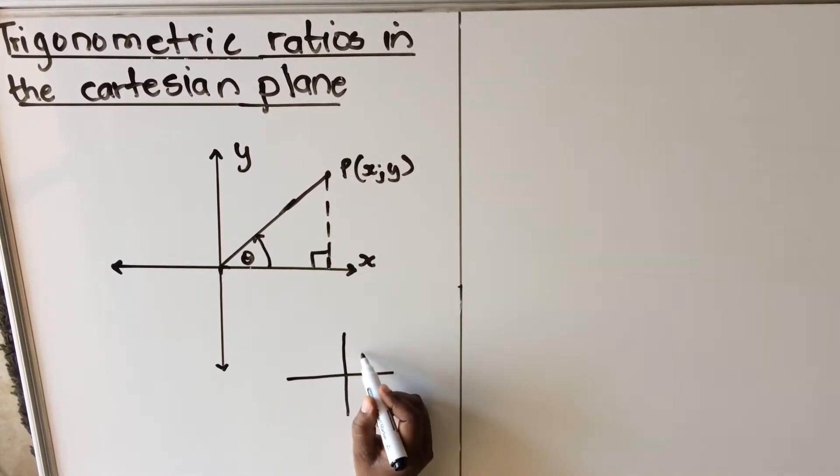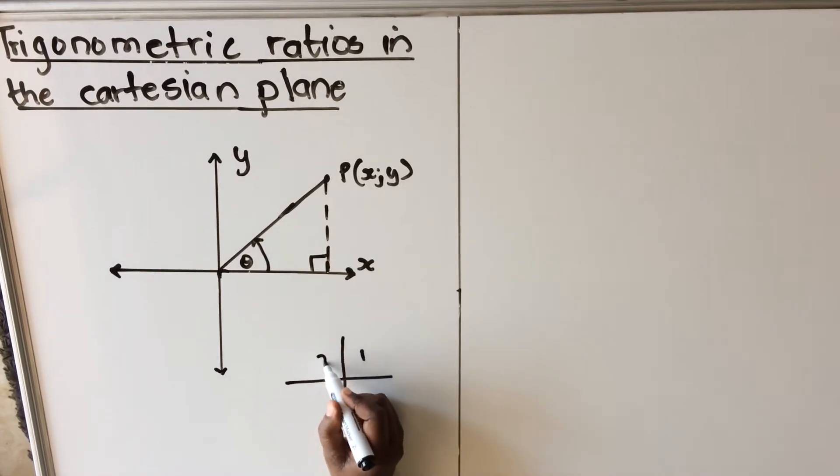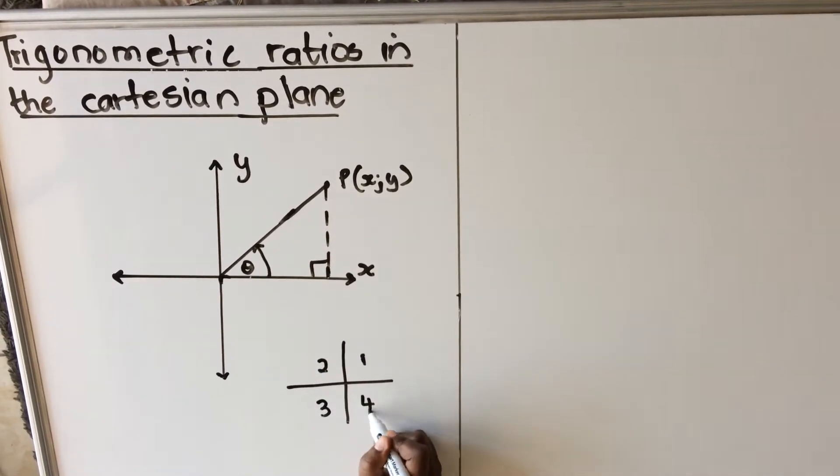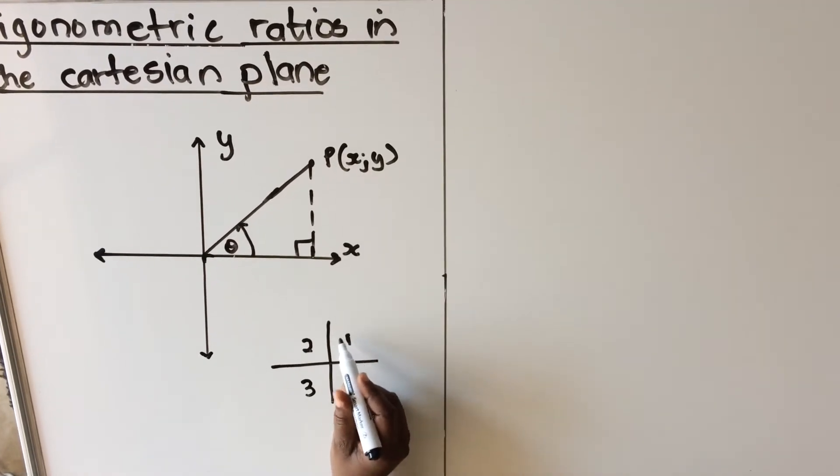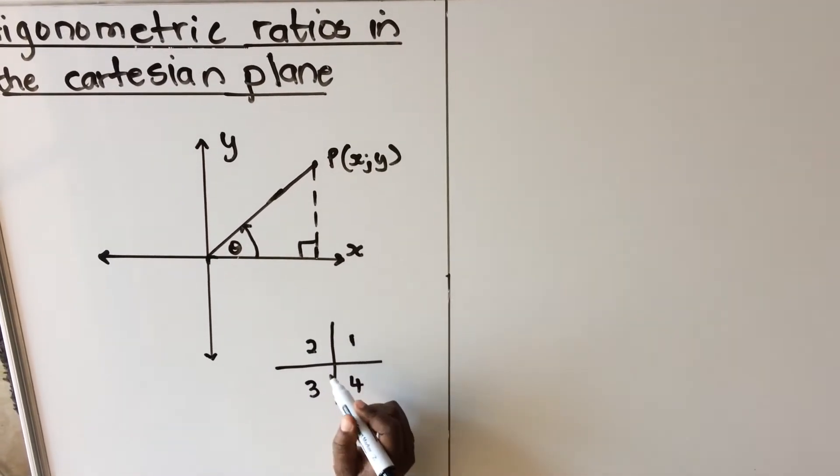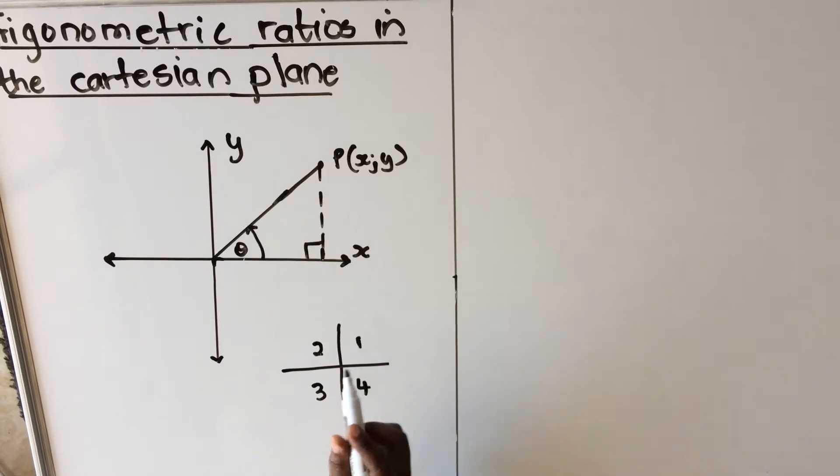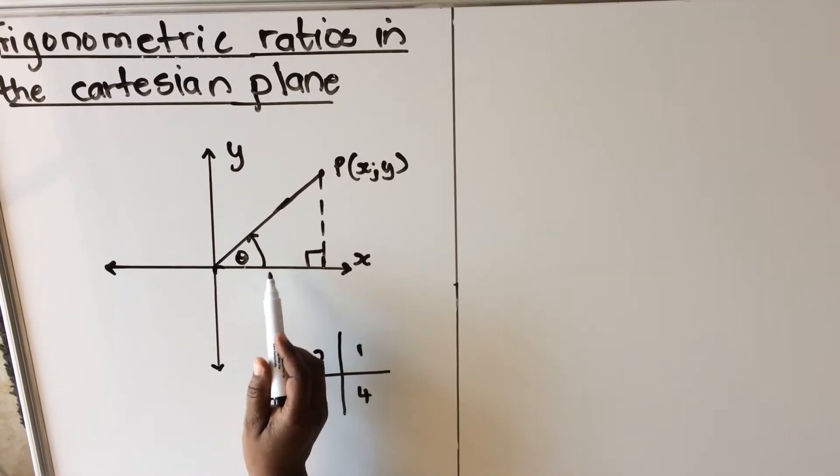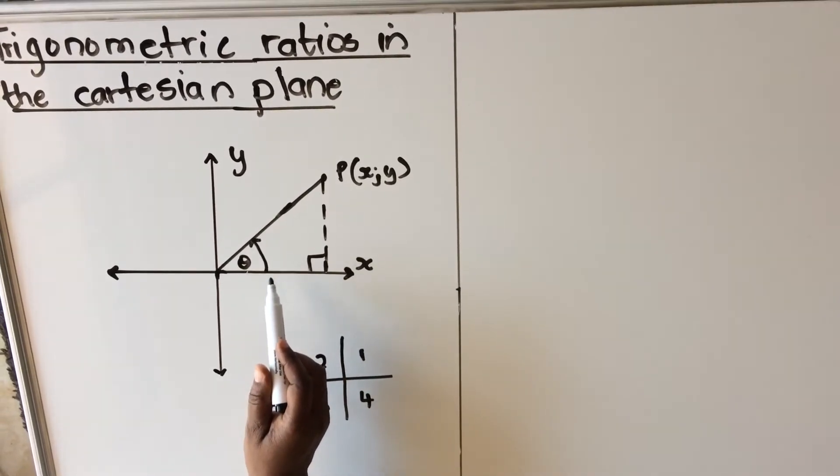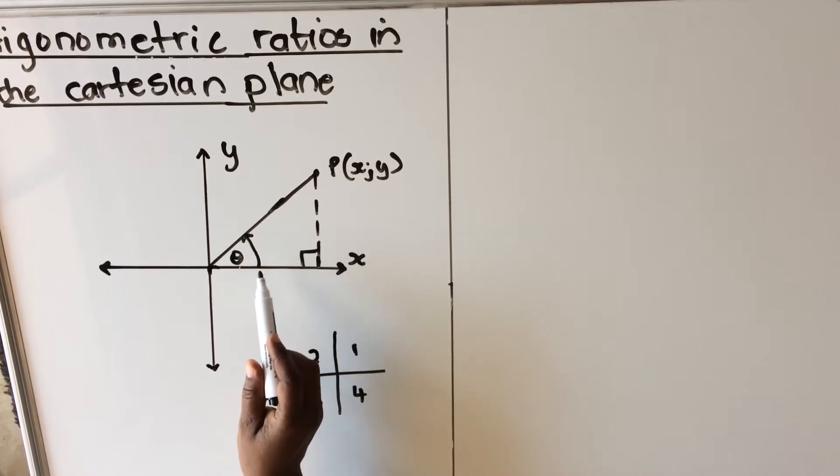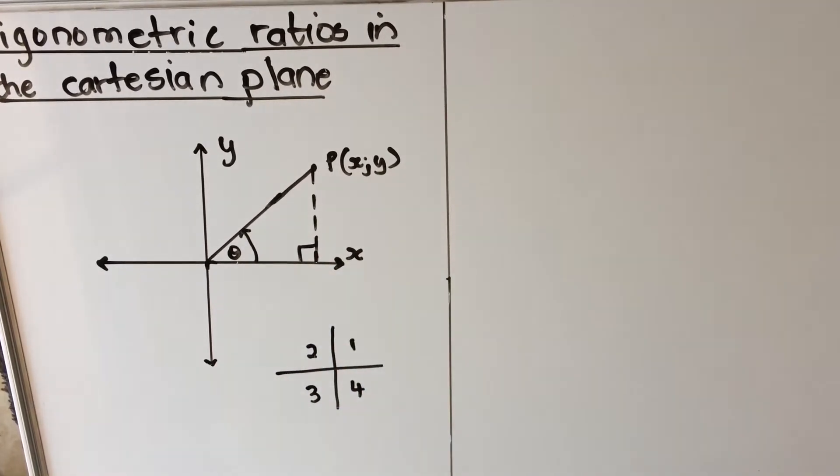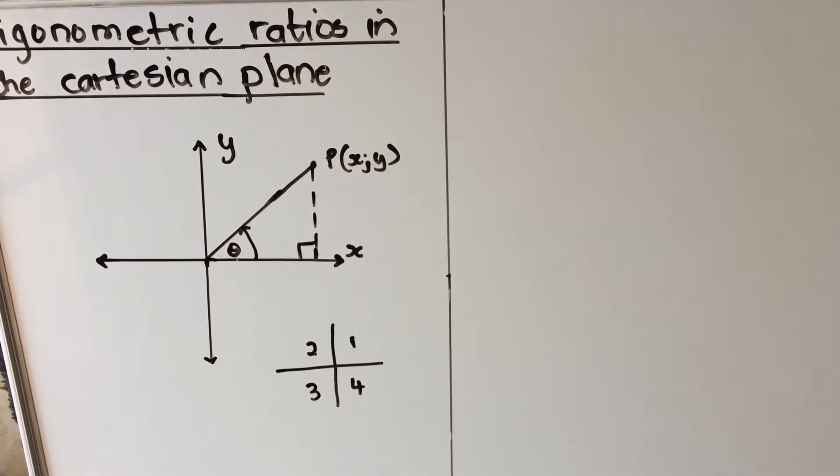This is the first quadrant, this is the second quadrant, the third quadrant and the fourth quadrant. When you count quadrants, we go anti-clockwise. So the one that I've drawn here is in the first quadrant. So I'm going to talk about how the ratios work in the Cartesian plane.